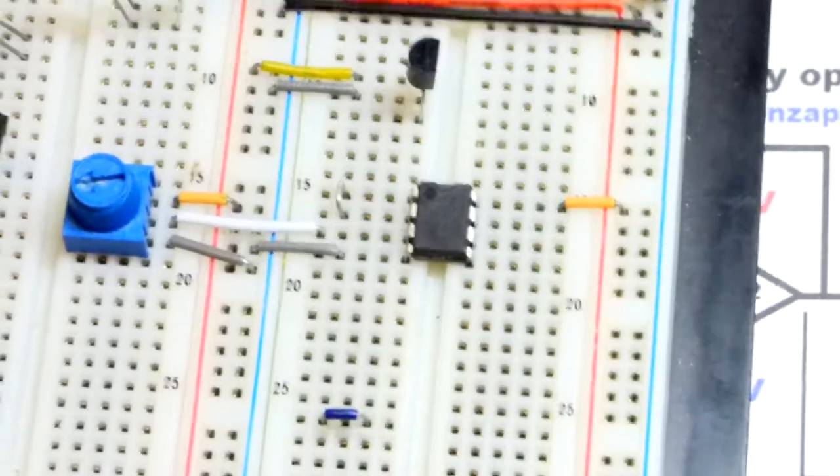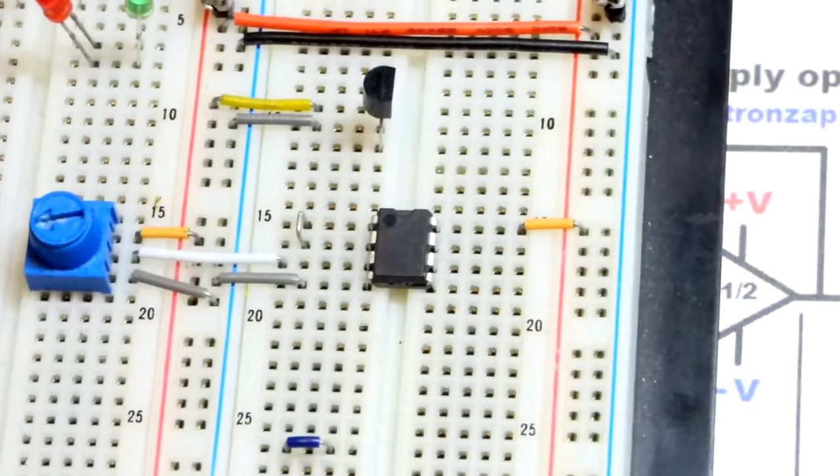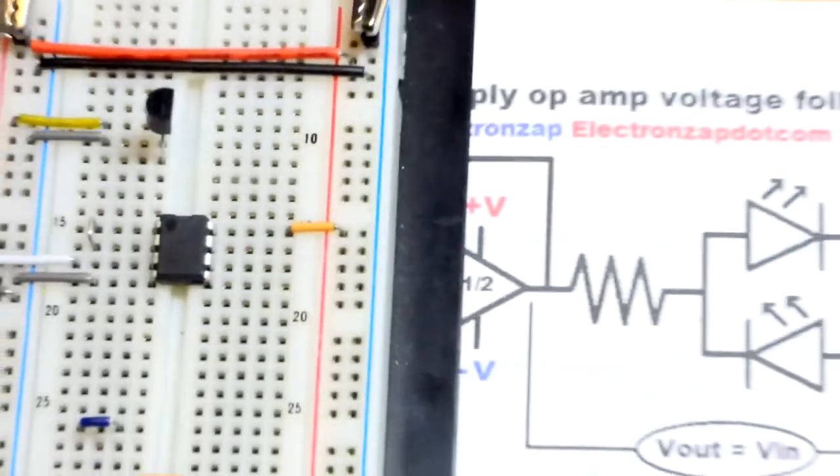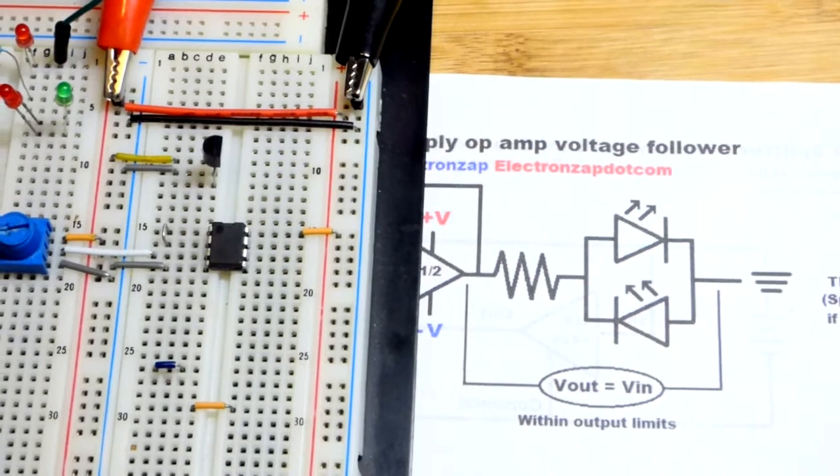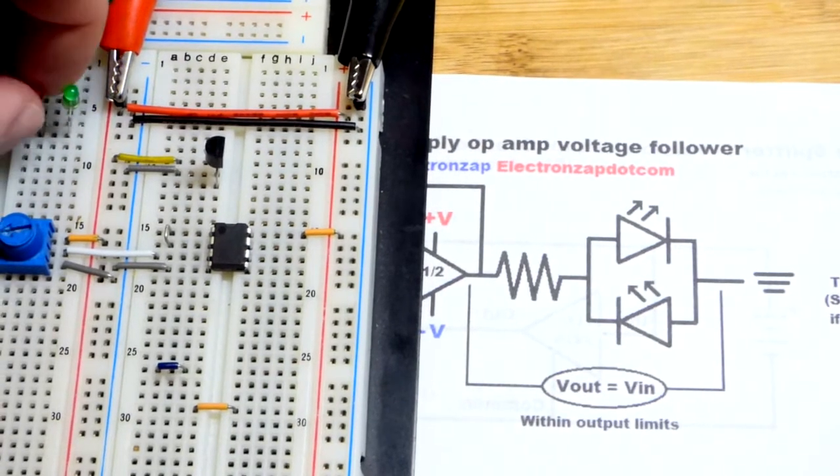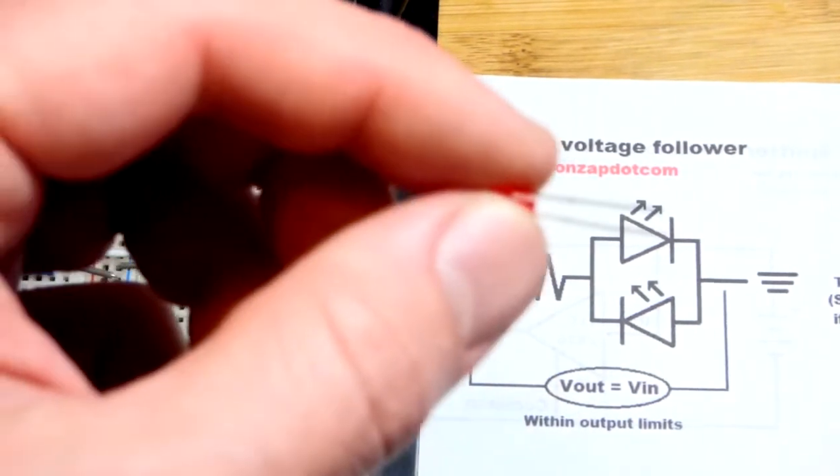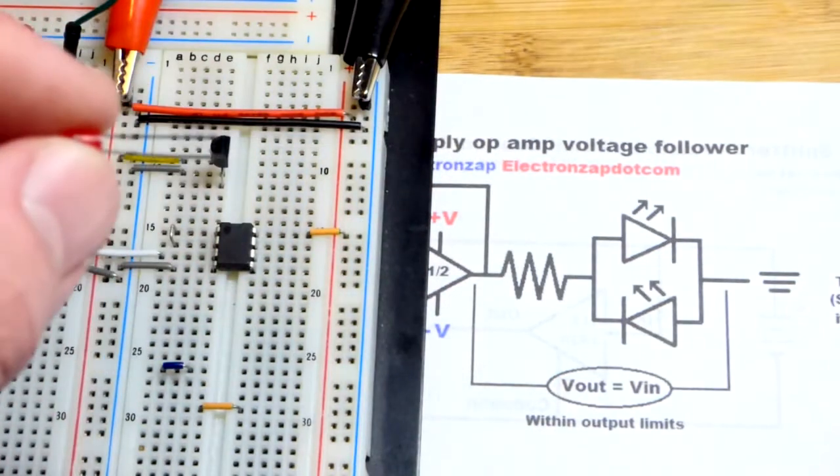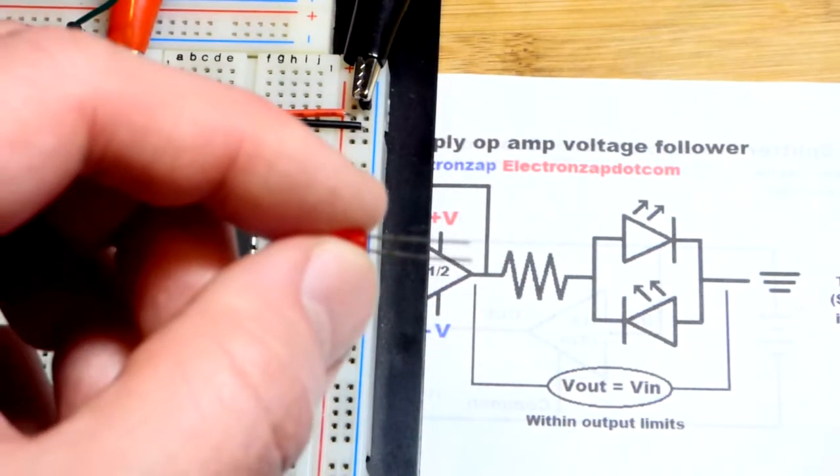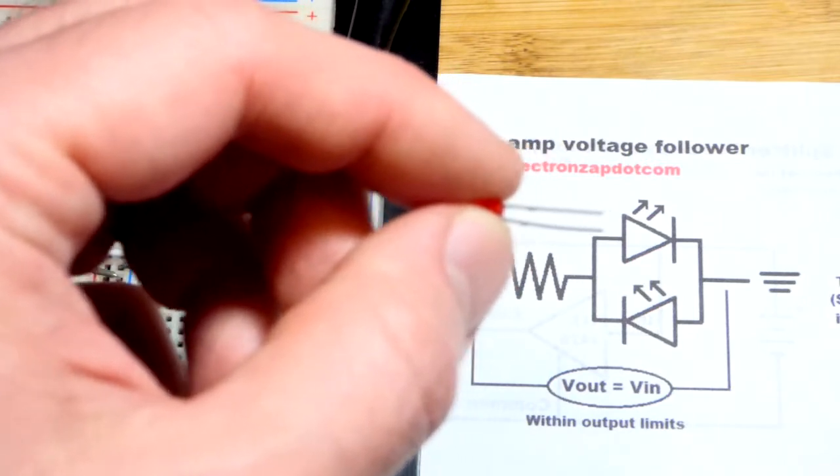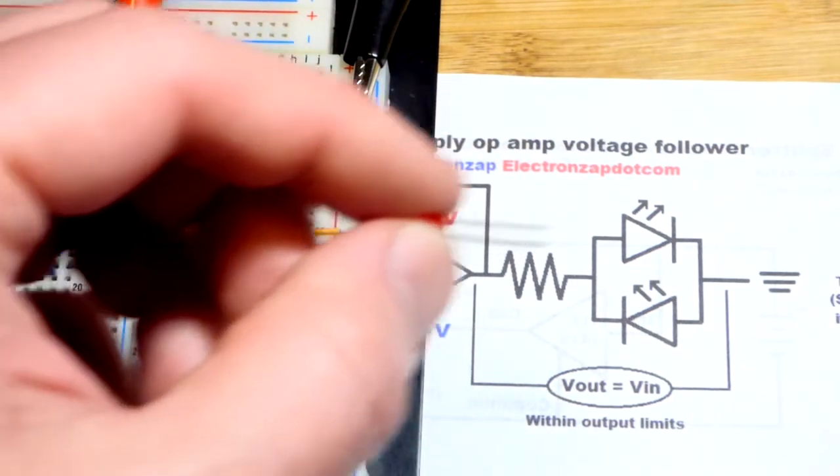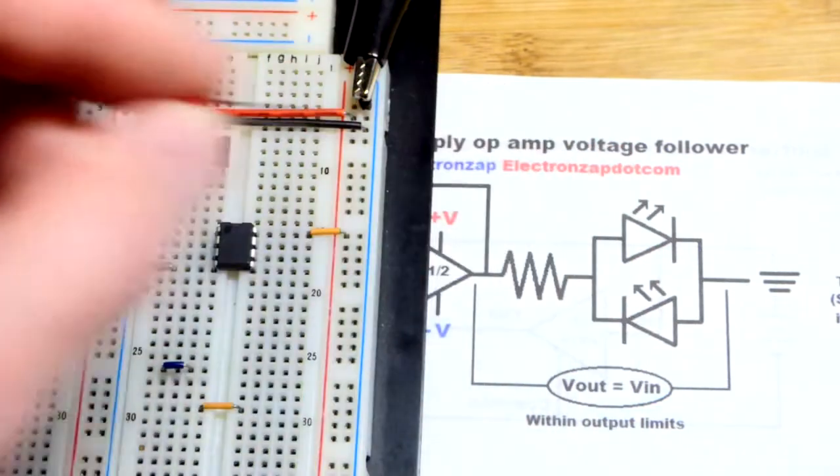At the output we're also going to put our load which is going to be just a couple LEDs protected by a resistor. So first I'll do the LEDs. I'm going to take the red LED. I want it to light up when the output is more positive. So the anode, the long lead there, has to be connected towards the output. Short lead to cathode towards ground.